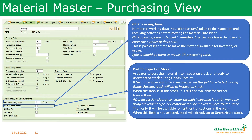Post to inspection stock: if a material is subjected to be inspected, this field has to be used. If this field is triggered, the material will be received into quality inspection stock. Until the material is in quality inspection stock, it cannot be used for any other purpose. The material has to be moved from quality inspection stock to unrestricted stock — this can be done manually or through inspection lots. After moving to unrestricted stock only, it is available for further usage in inventory and further processes.